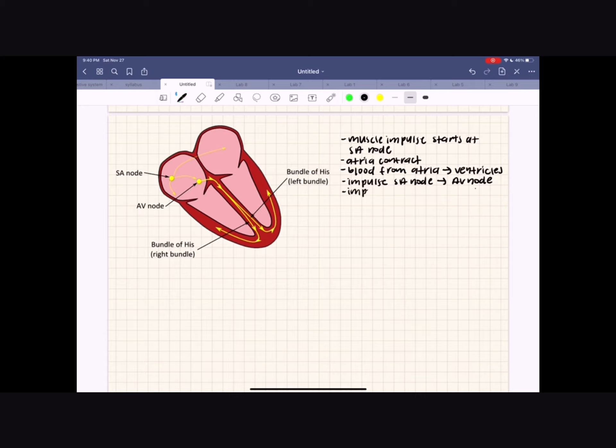The impulse is then carried from this node down the bundle of Hiss. The branches of this bundle, called Purkinje fibers, then carry the impulse throughout the walls of the ventricles, the signals finally allowing the two ventricles to contract.